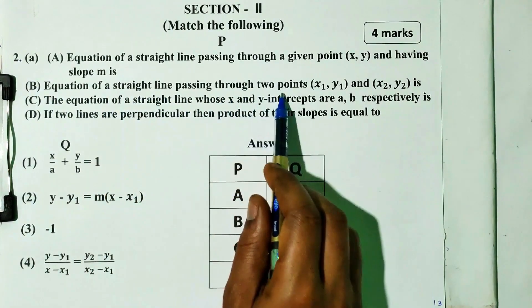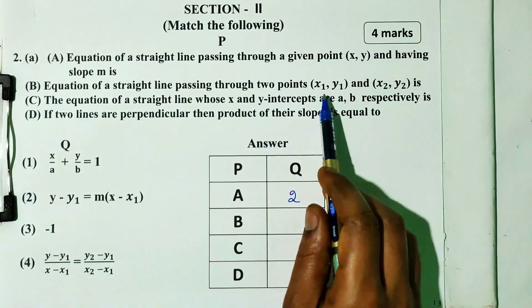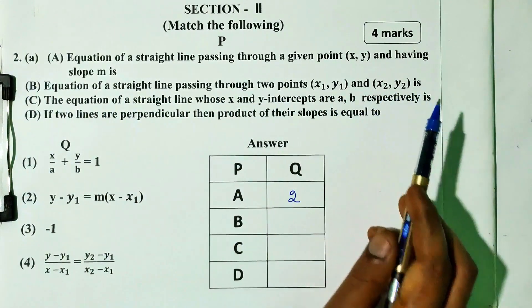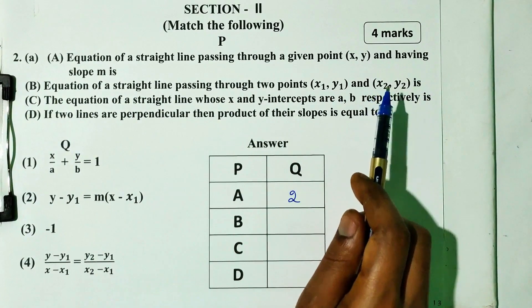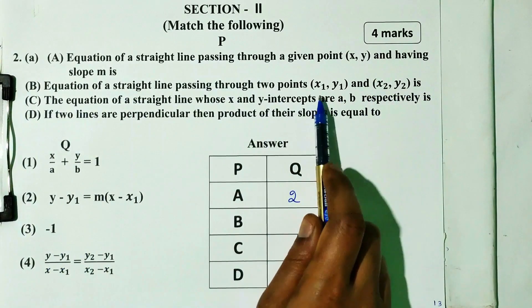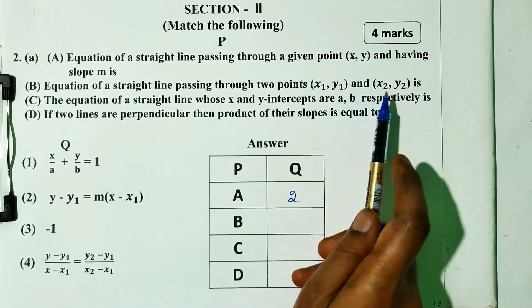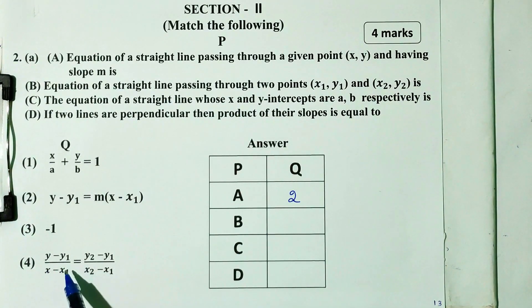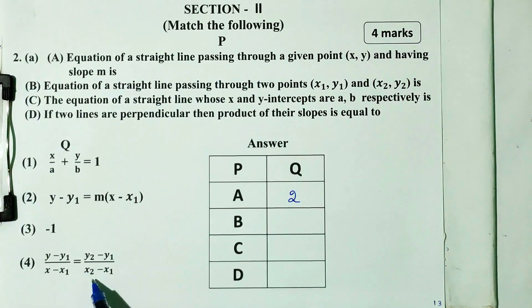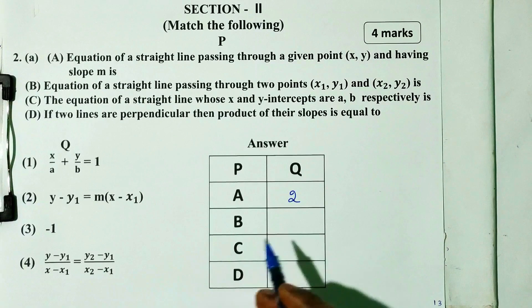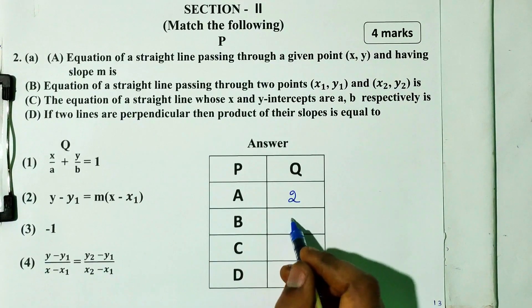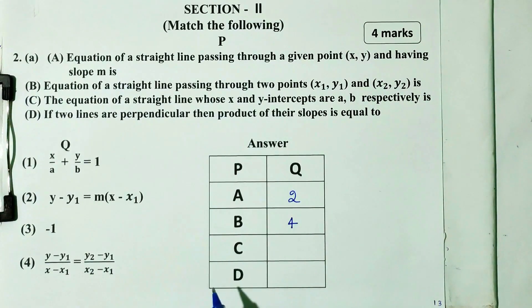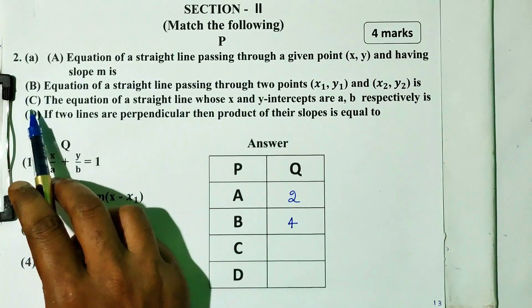Equation of straight line passing through the two points (x1, y1) and (x2, y2). This formula is option 4. That is: y minus y1 divided by x minus x1 is equal to y2 minus y1 divided by x2 minus x1. Option b answer is 4.